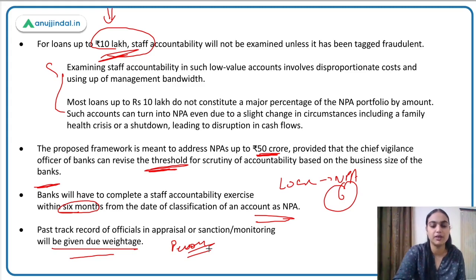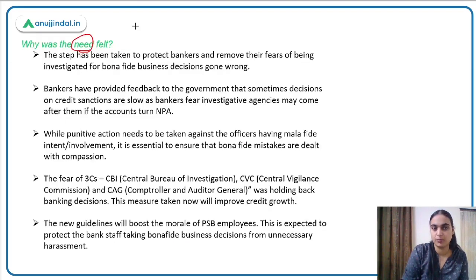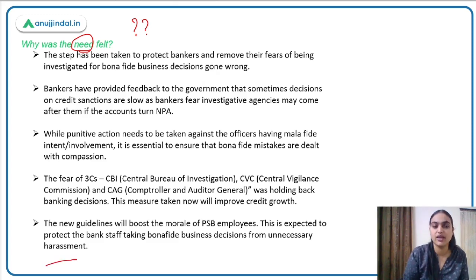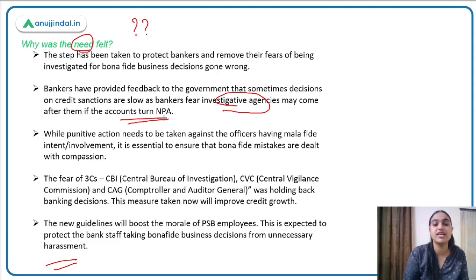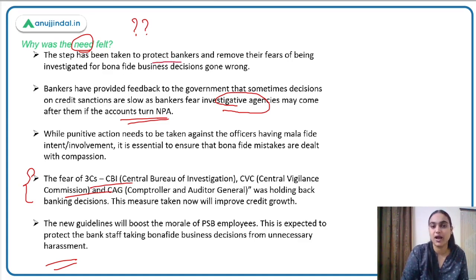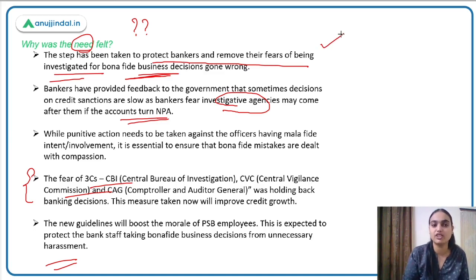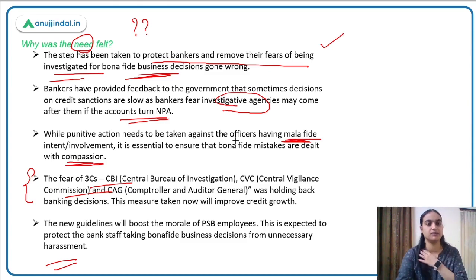This new framework has been proposed because the existing system was harming employee morale. Employees were reluctant to sanction new loans because they feared investigative agencies — the CBI, Central Vigilance Commission, or Comptroller and Auditor General — would come after them if accounts turned NPA. This step has been taken to protect bankers and remove their fear of being investigated for bona fide decisions. People with correct intentions should not be punished; only those with wrong intentions should face action.